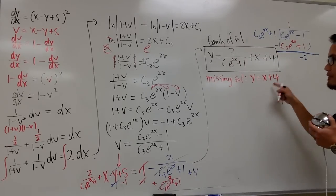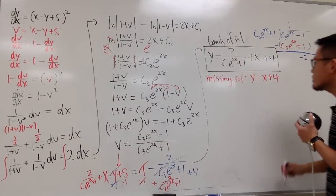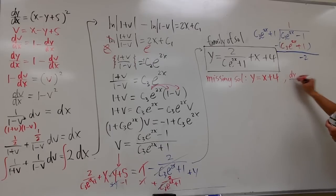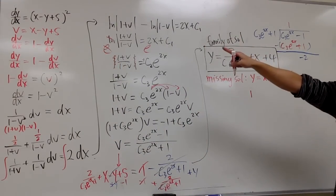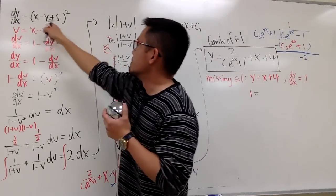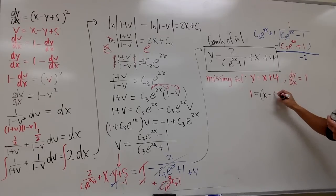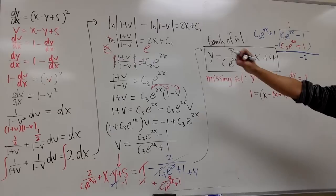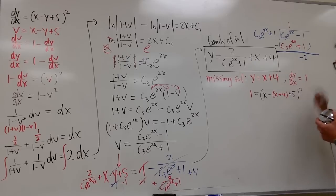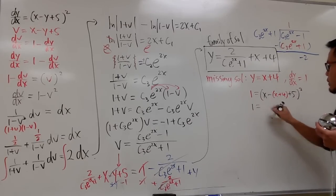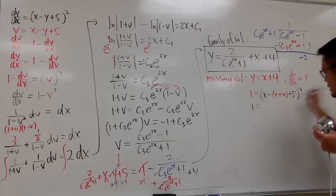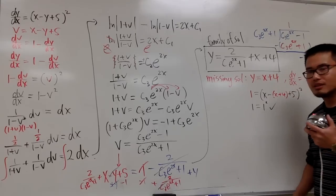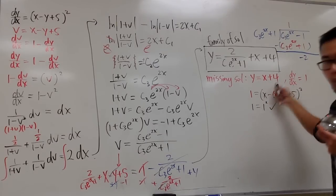Let me demonstrate that y equals x plus 4 does satisfy the differential equation. Differentiating: dy/dx equals 1. Plugging into the original: check whether 1 equals (x minus (x plus 4) plus 5) squared. The right-hand side becomes (x minus x minus 4 plus 5) squared, which is (1) squared, equals 1. It works.